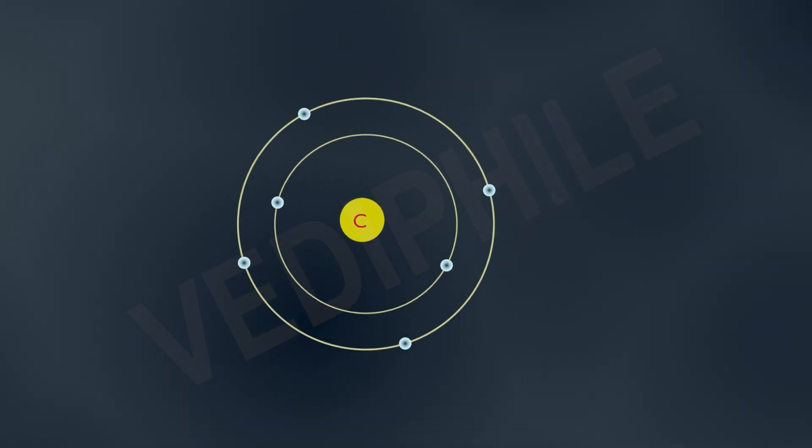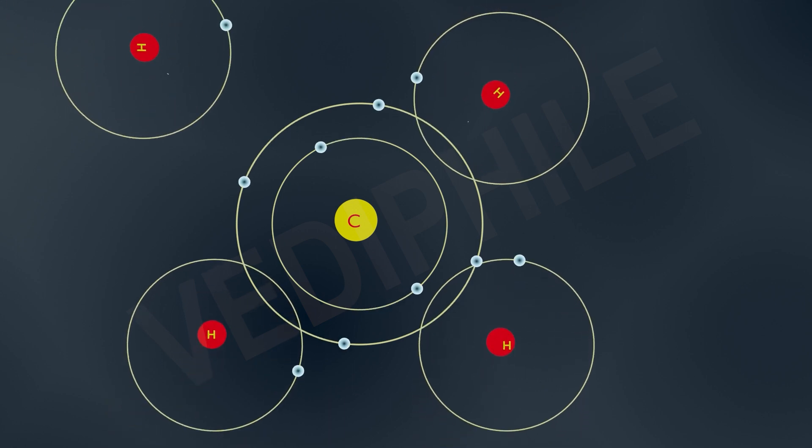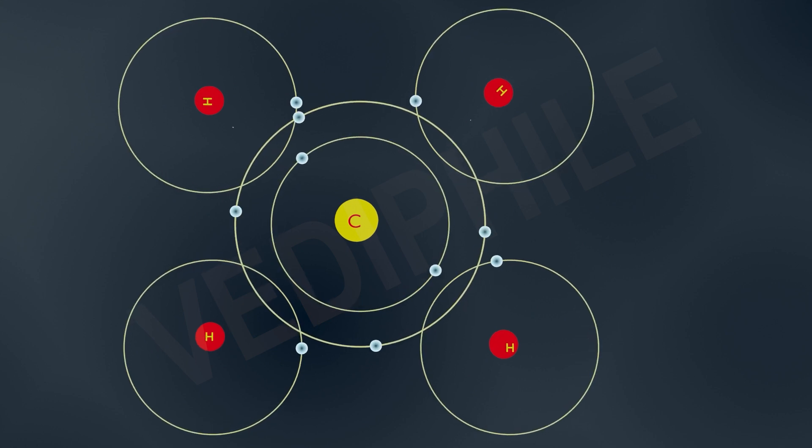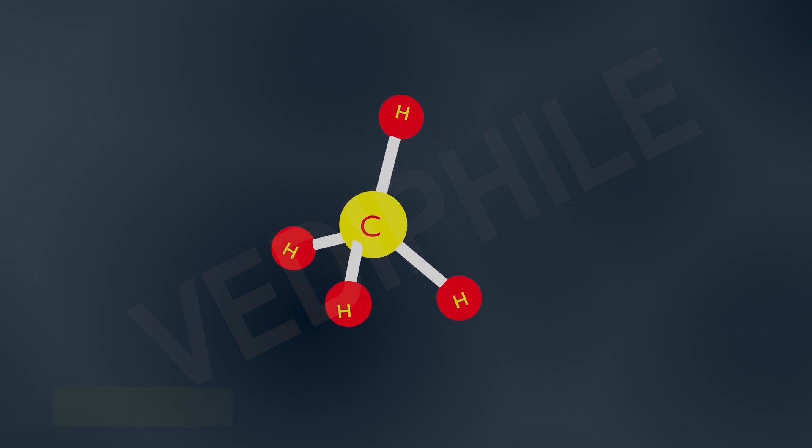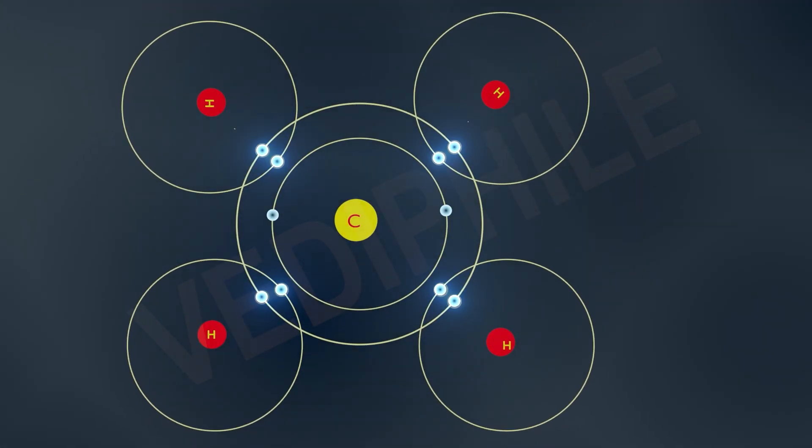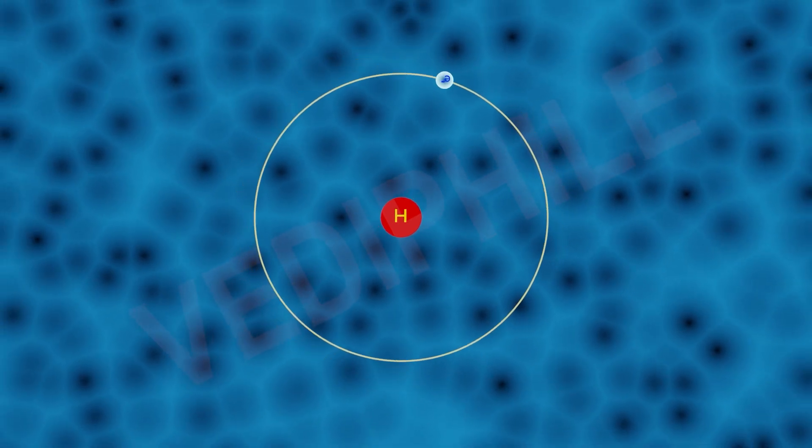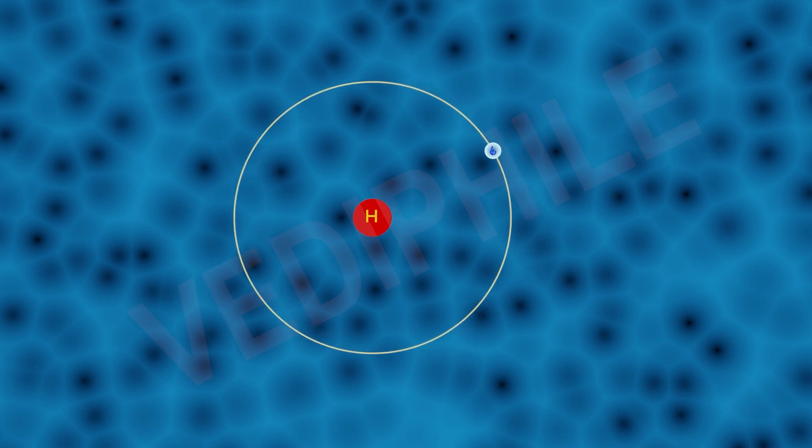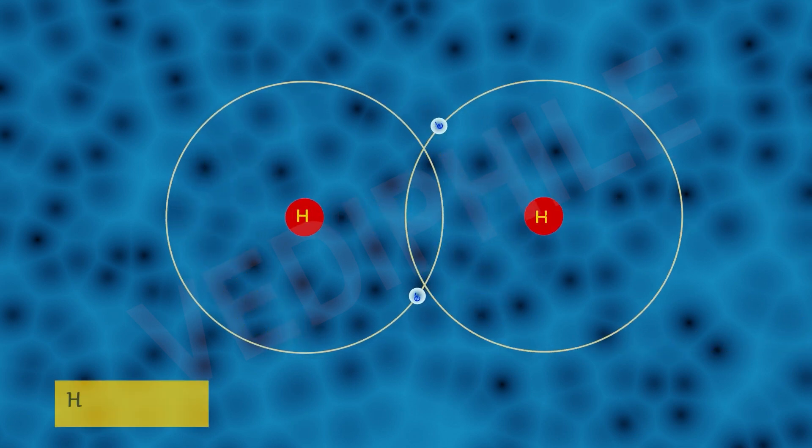Sharing of electrons between 2 atoms results in the formation of new bonds between atoms, and that bond is known as covalent bond. This increases the stability of molecule.